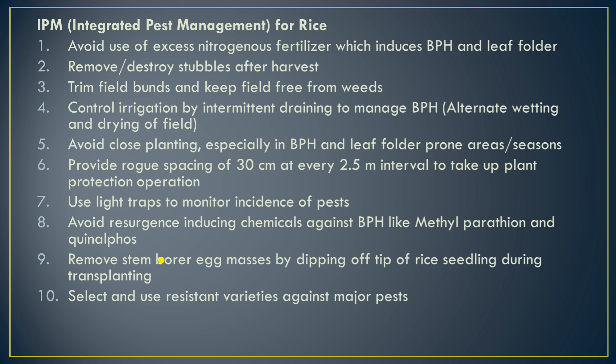Controlled irrigation by intermittent drainage to manage brown plant hopper — alternate wetting and drying of fields is recommended, because continuous wet conditions lead to very high brown plant hopper attack. Therefore we should alternate wetting and drying. Also avoid close planting, as close planting is very favorable for brown plant hopper, since sunlight cannot reach down to the base of plants under close planting conditions.